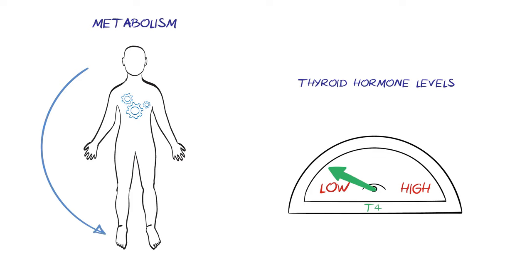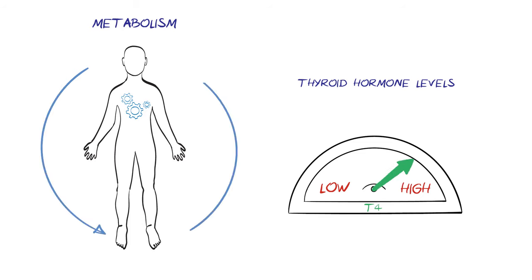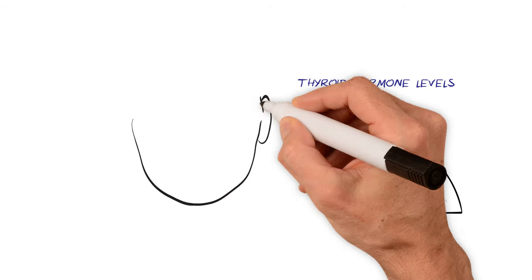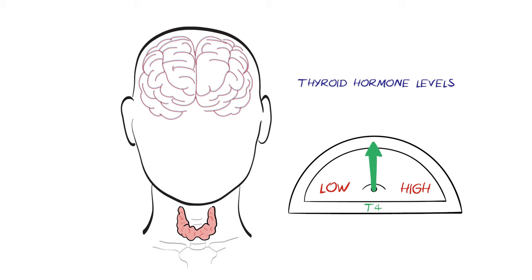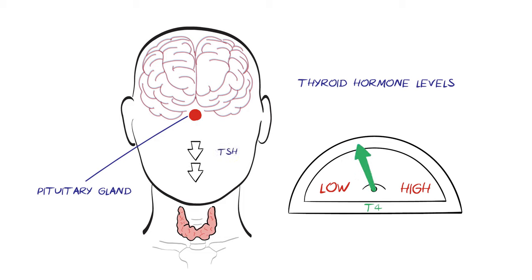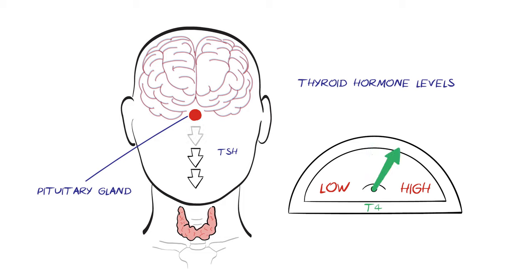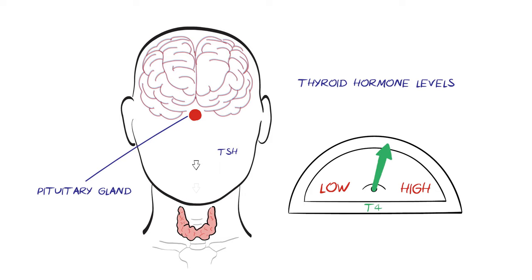If there is too little thyroid hormone, then the cells work too slowly. But if there is too much, the cells work too quickly. The brain helps to keep levels in check by measuring the levels of thyroid hormones in the blood. If levels are low, the pituitary gland releases thyroid-stimulating hormone, or TSH, to stimulate the thyroid gland to release more thyroid hormones. If thyroid hormone levels are too high, then less TSH is released by the brain. In this way, the levels of thyroid hormones in the blood are usually kept in balance.